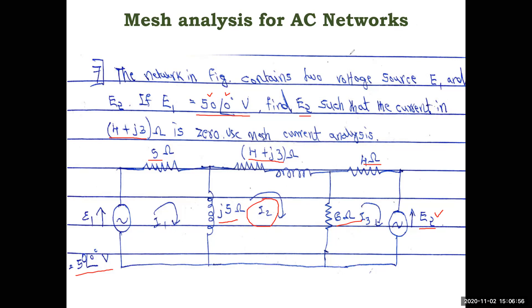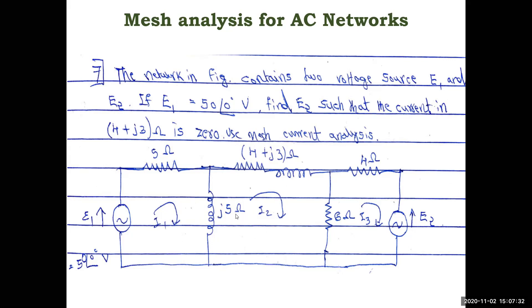Applying KVL, or using the general mesh analysis approach directly: the self-impedance of loop 1 is 5 + j5 Ω, multiplied by I1, minus the mutual impedance j5 Ω multiplied by I2 — there is no I3 term — equals the source voltage 50∠0° V. The current is in the direction of the voltage, so the right-hand side is 50∠0° V.